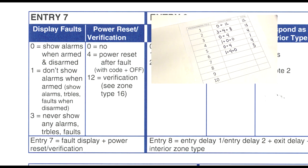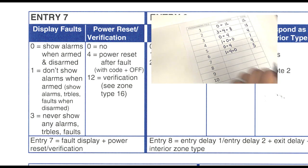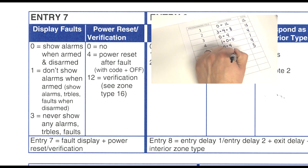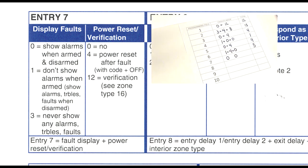Moving along to field seven. Display faults — do we want the system to display faults when they are occurring? Yes, we want the system to show alarms when armed and disarmed, so enter in a zero. Power reset and verification — we do not need this for this zone, so enter another zero. Zero plus zero equals zero for field seven.